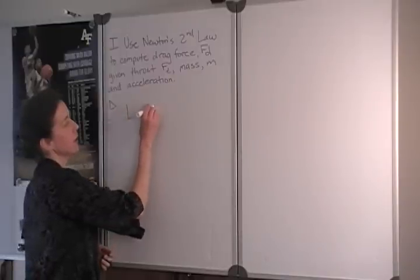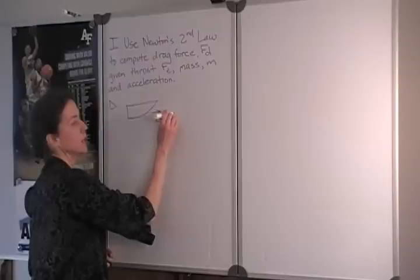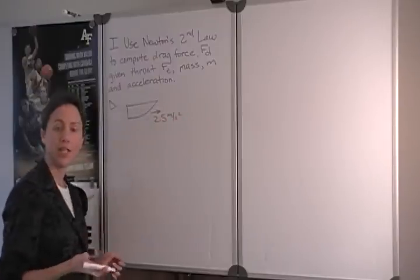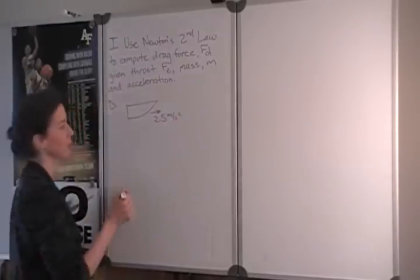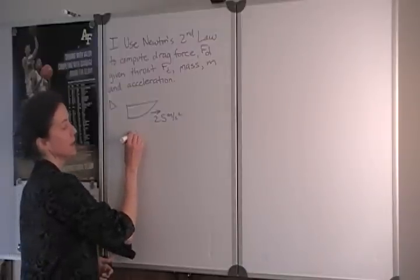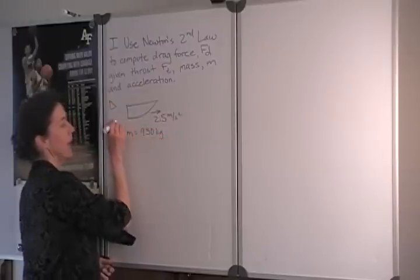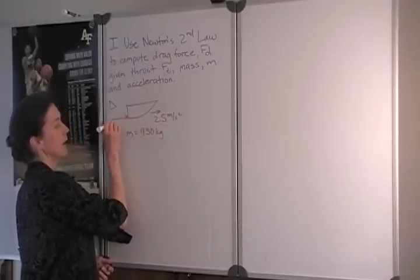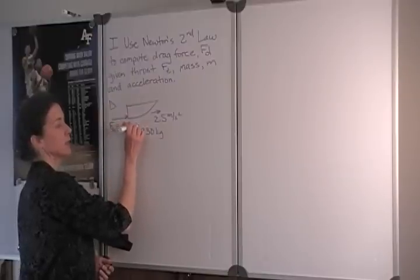So the scenario is this. We have a boat accelerating at 2.5 meters per second squared, and I've changed these exact numbers a little bit so that you can work the problem out on your own later. We're given that the mass of the boat is 930 kilograms, and that the thrust force provided by the boat's engine is 4.1 kilonewtons.